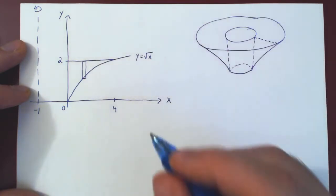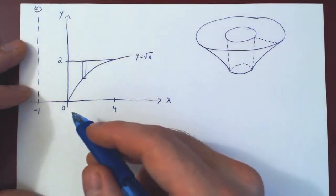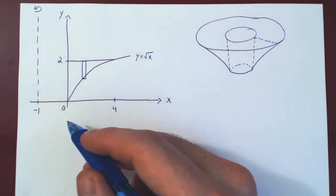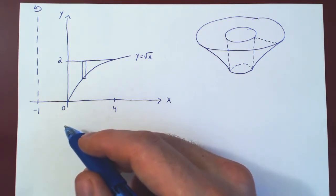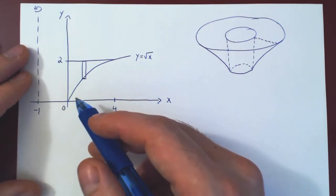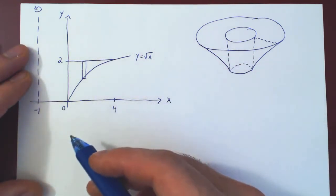In the previous video, we used horizontal rectangles, which generated little washers, and we obtained a volume of 876 over 15 pi units cubed. Hopefully here we get the same answer.